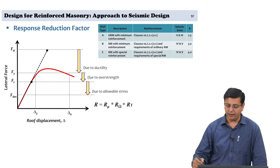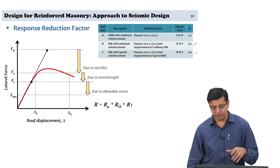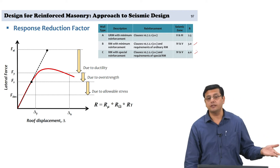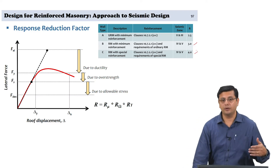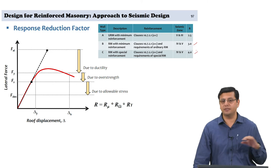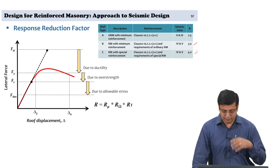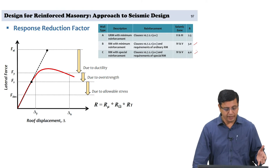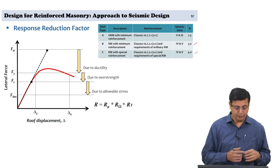For Type B and C walls, we are allowed to go to R factors of 3 and a maximum of 4 for Type C, which is with special reinforcement — approximately 0.2% combination of horizontal plus vertical reinforcement and a minimum of 0.07% in any direction. So if you are looking at R factors of 3 or 4, what is this R factor actually doing?